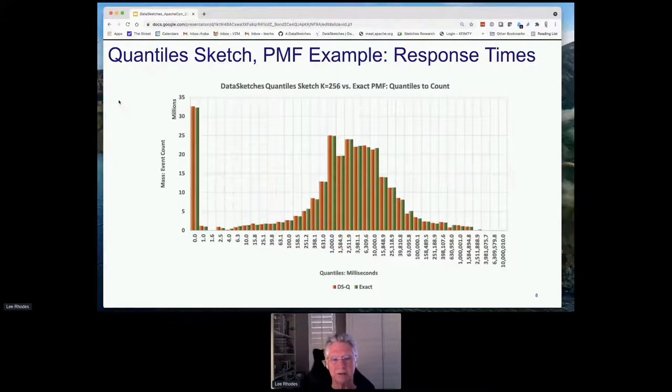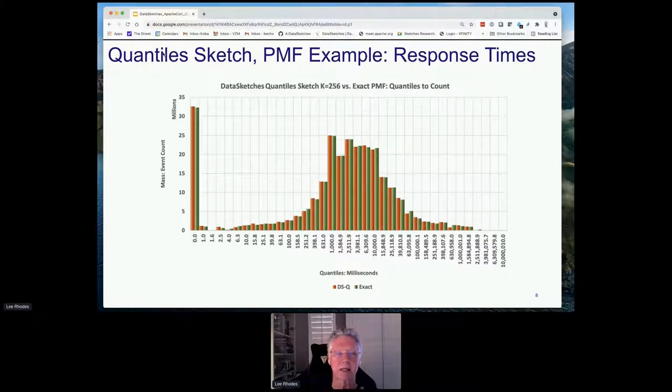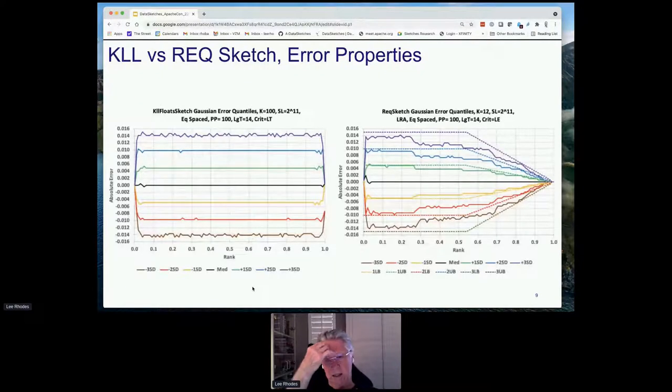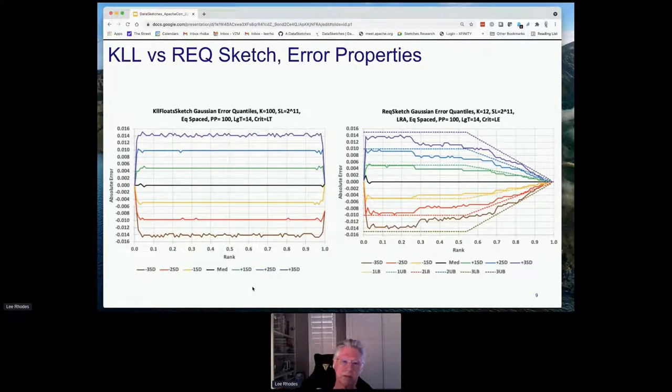You notice the big spikes on the left, that's due to the fact that real data often has a lot of nulls and zeros in it. Real data that we get on our platforms is not necessarily pretty, but that doesn't bother the sketch at all. It just dutifully records the fact that you've got a lot of zeros in your data. Like I say, it's really data independent.